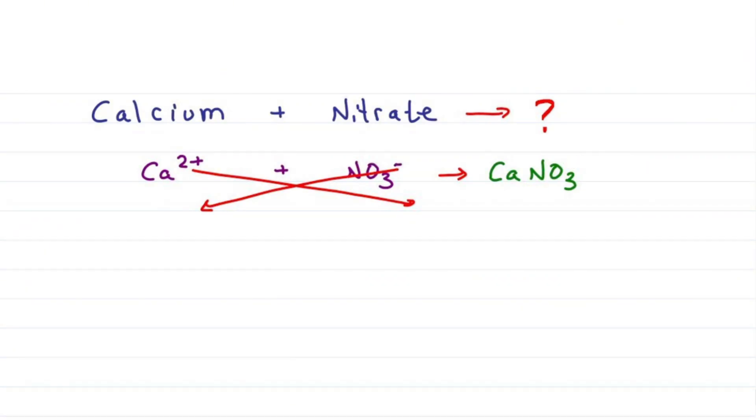For a polyatomic ion, you have to put the entire thing in parentheses and then put a subscript after, telling you that everything in the parentheses is multiplied by that number. That's 2 nitrogen, 2 times 3 for 6 oxygen, and a net charge that's neutral.